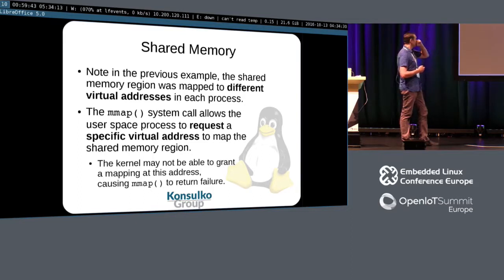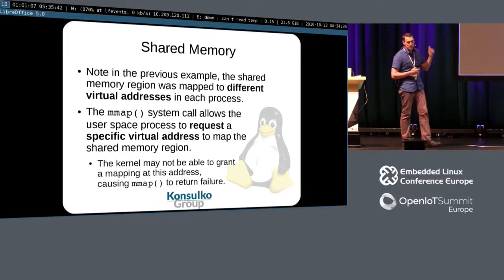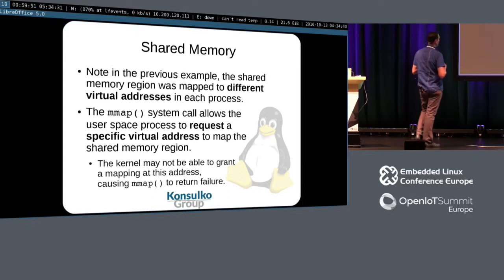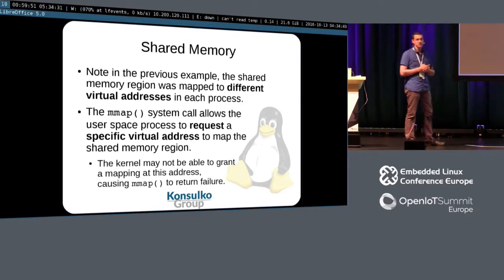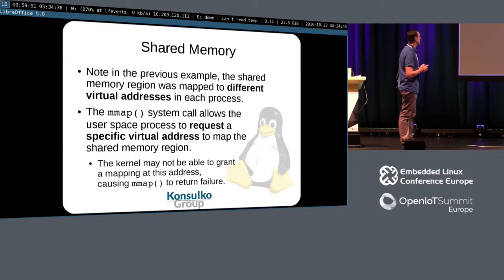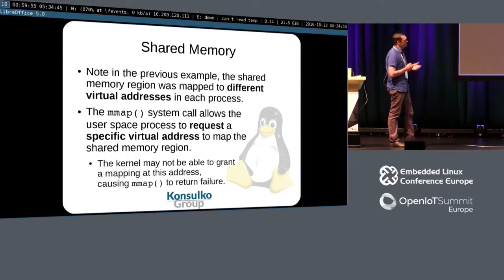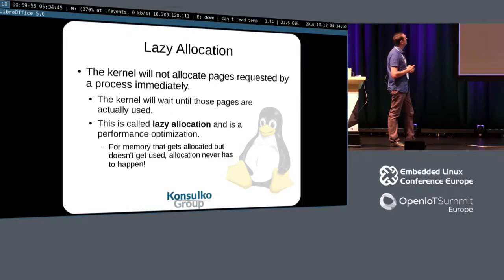That was a case with different virtual addresses. The mmap system call allows you to get at a specific address to share the memory — that's a different case — and it can fail.